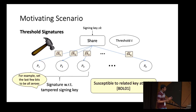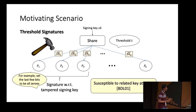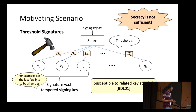You might wonder: if the adversary can tamper with the signing key to some related signing key, isn't he breaking the secrecy property of the secret sharing scheme? The answer is no. It is possible to tamper with the secret even without learning the underlying secret. In other words, secrecy alone is not sufficient to prevent these tampering attacks.